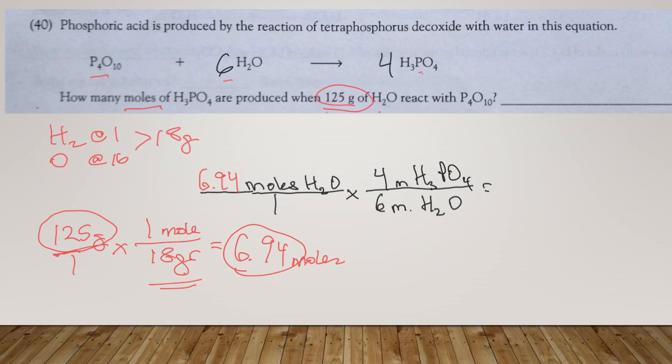6.94 moles of water, multiply that times the four moles of H3PO4 divided by the six moles of water, so the water cancels out, and you are not going to get a whole number, you're going to get a decimal number. So I'll let you finish that and then that will be the number of moles of the H3PO4 phosphoric acid.